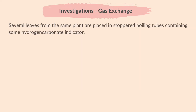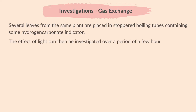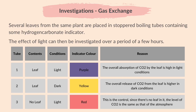Several leaves from the same plant are placed in stoppered boiling tubes containing some hydrogen carbonate indicator. The effect of light can then be investigated over a period of a few hours. Results from a typical experiment are shown in the table. When the leaf is exposed to light, the indicator turns purple, meaning the overall absorption of carbon dioxide by the leaf is high. When the leaf is in dark conditions, the indicator turns yellow, meaning the overall release of carbon dioxide from the leaf is high.